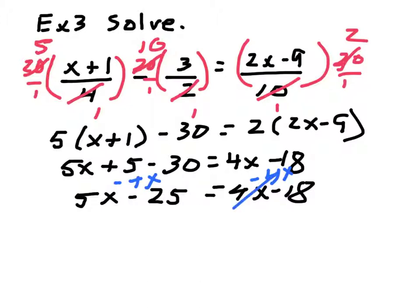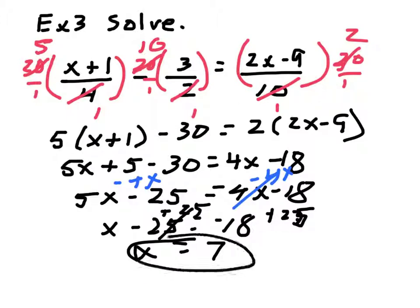These cancel. 5 minus 4 is 1x or x. So, x minus 25 equals a negative 18. Now, let's finish it off by adding 25. So, x then, and my 25 got a little sloppy there, but that's a negative 18 plus 25. Let's see, 18 degrees below zero, temperature rises 25. That's going to be a positive 7. So, x is equal to 7, and that's the solution to my equation.